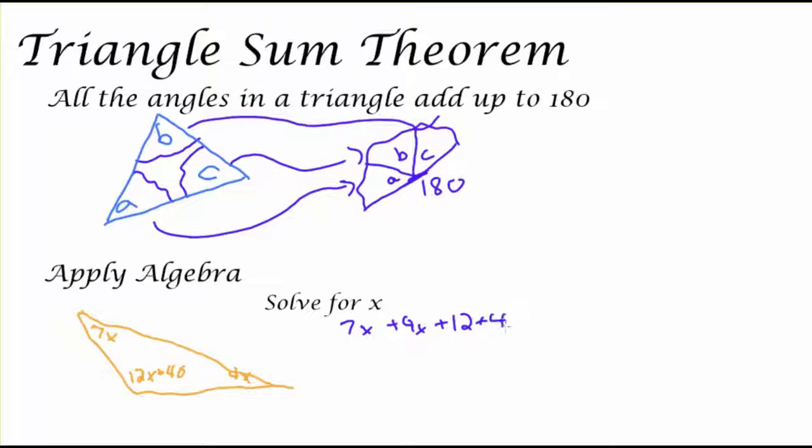And setting those expressions equal to 180. And then I can use my algebra skills to solve. So I can combine like terms and have 23x plus 40 equals 180 degrees.